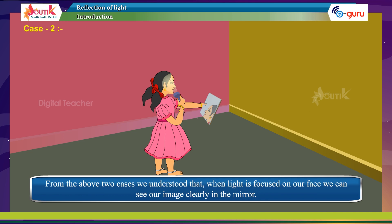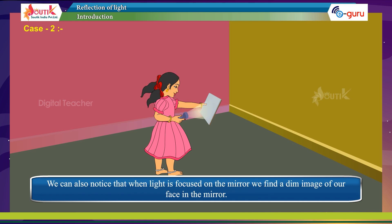From the above two cases, we understood that when light is focused on our face, we can see our image clearly in the mirror. We can also notice that when light is focused on the mirror, we find only a dim image of our face in the mirror.